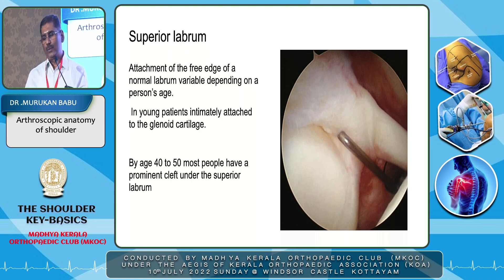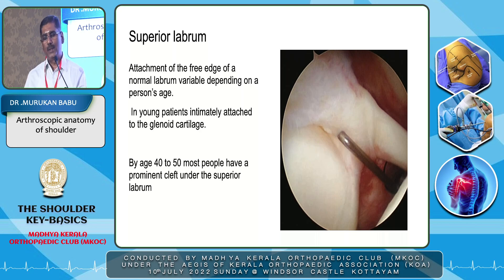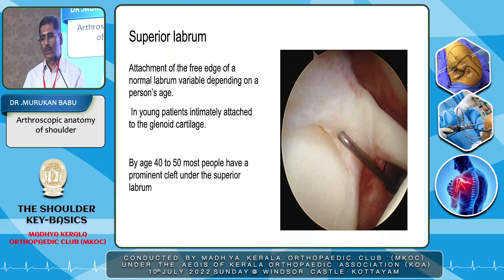The next part of the first position is the superior labrum. This is the attachment of the free edge of the normal labrum, which is variable depending on the patient's age. In young patients, it is intimately attached, but as age advances, there can be a cleft between the superior labrum and the glenoid, and that is also normal.